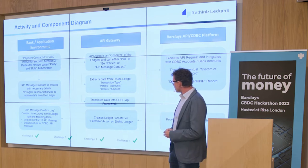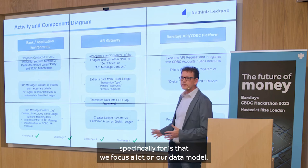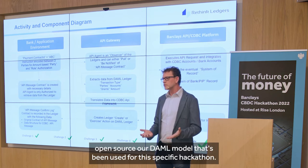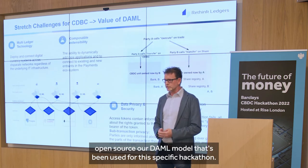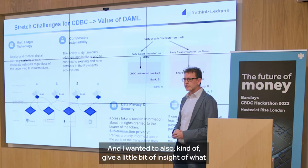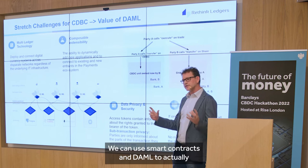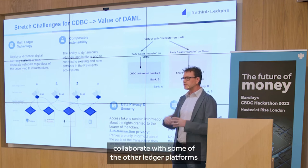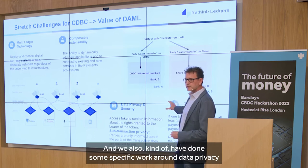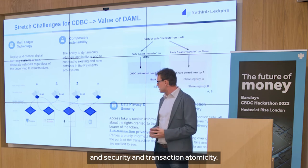One of the things we're taking forward from this challenge is that we want to open source our DAML model that's being used for this specific hackathon. We also want to give some insight into potential stretch opportunities: one is multi-ledger technology, where we can use smart contracts in DAML to collaborate with some of the other venture platforms being discussed here. We also have specific work on data privacy, security, and transaction atomicity.